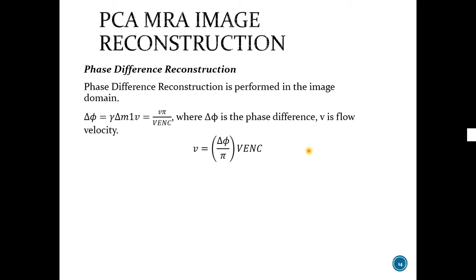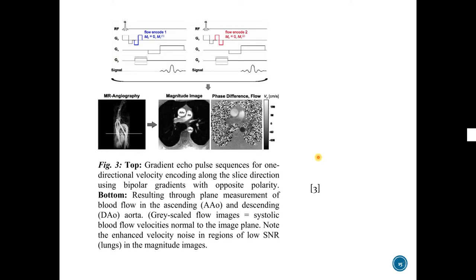I will briefly talk about PC MRI reconstruction techniques, one of which is phase difference reconstruction. Phase difference reconstruction is performed in image domain, and delta phase equals omega delta M1 V equals V pi over VENC, where delta phase is the phase difference and V is flow velocity. Without blue and red gradients, this is originally a gradient echo pulse sequence. With two measurements, applying bipolar gradients in opposite direction, phase difference images are obtained. As you can see, the phase difference here in the magnitude image.